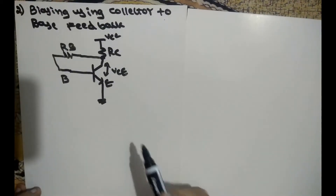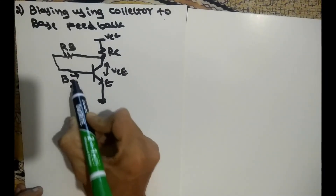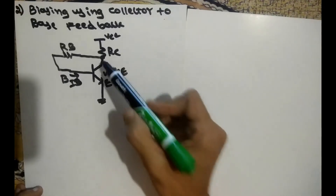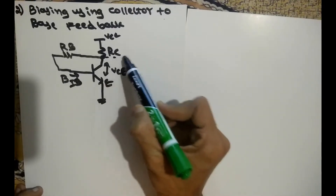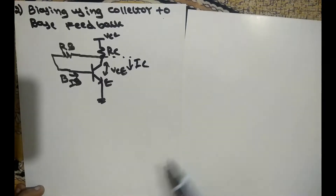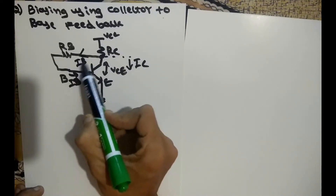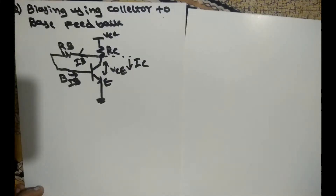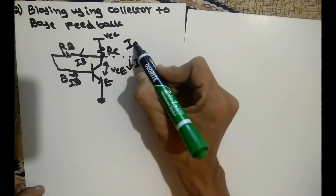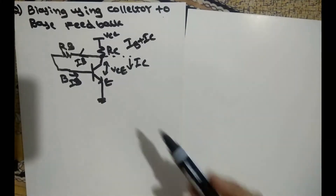Now what is the current here? We know that the base current going is IB, and the collector current is IC. So IB is leaving and IC is also leaving at that node. The entering current can be called IB plus IC, which is the current flowing through RC.